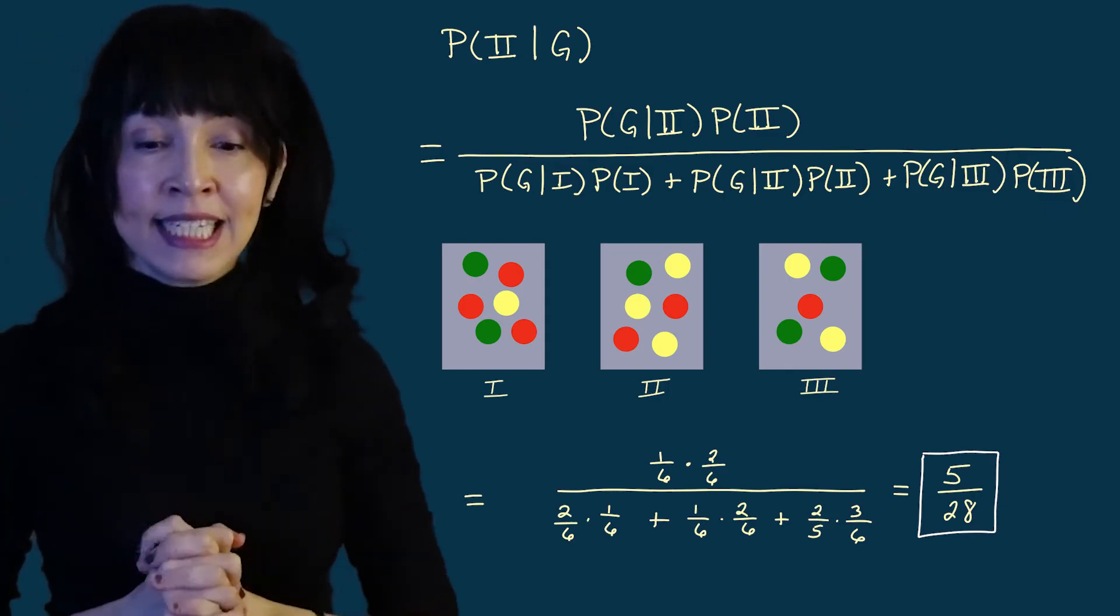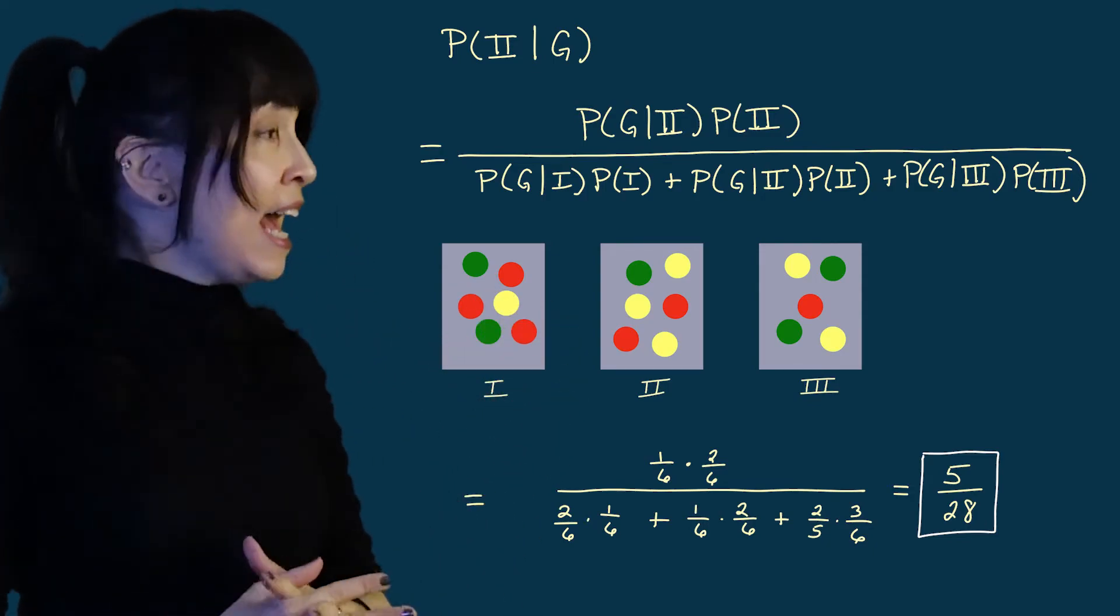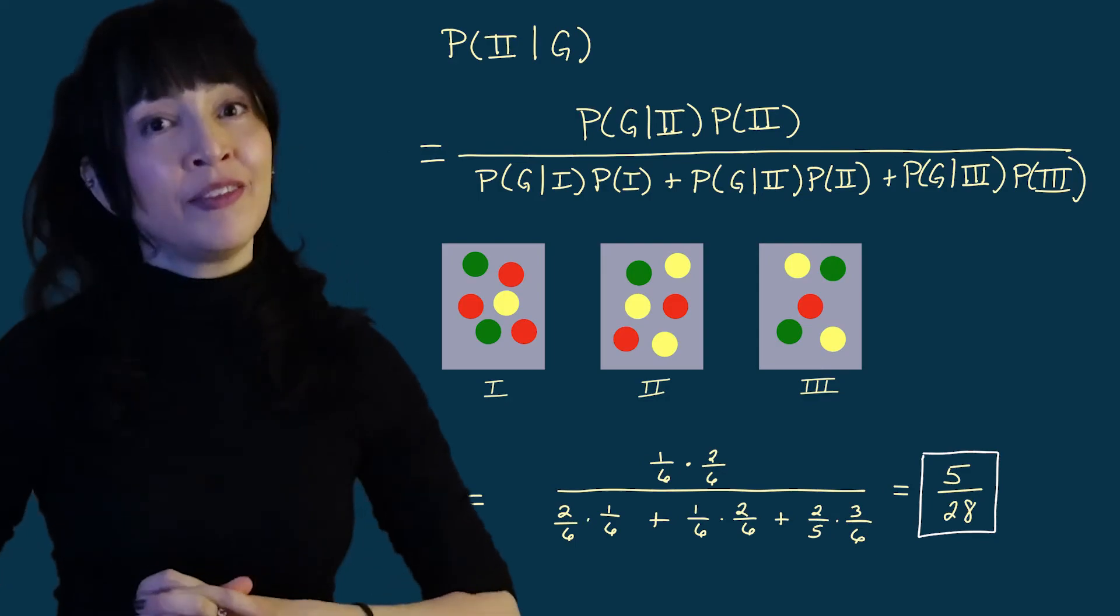So I get three out of six and the rest of the numbers are computed similarly and in the end we get five out of 28.